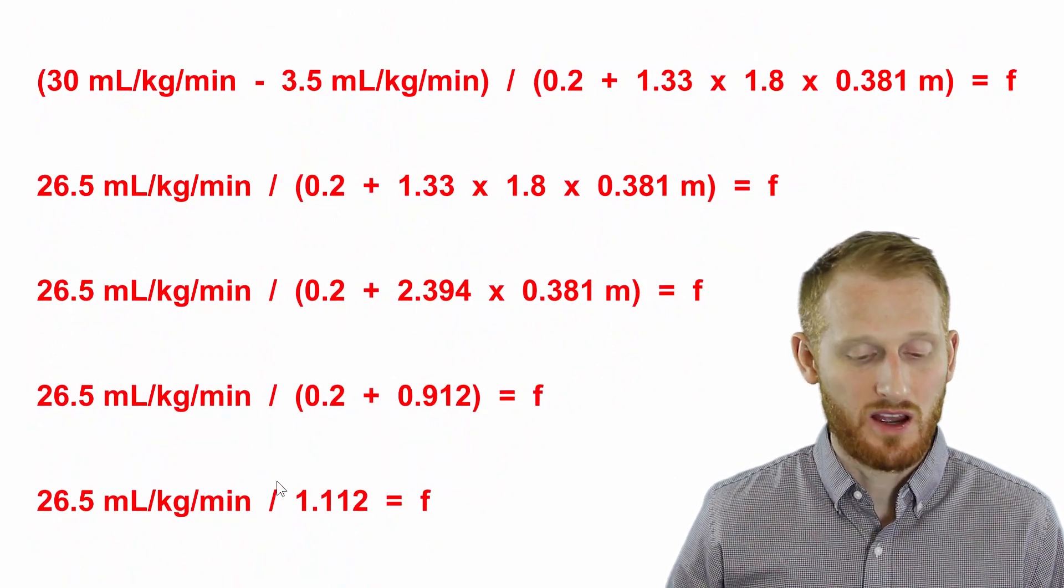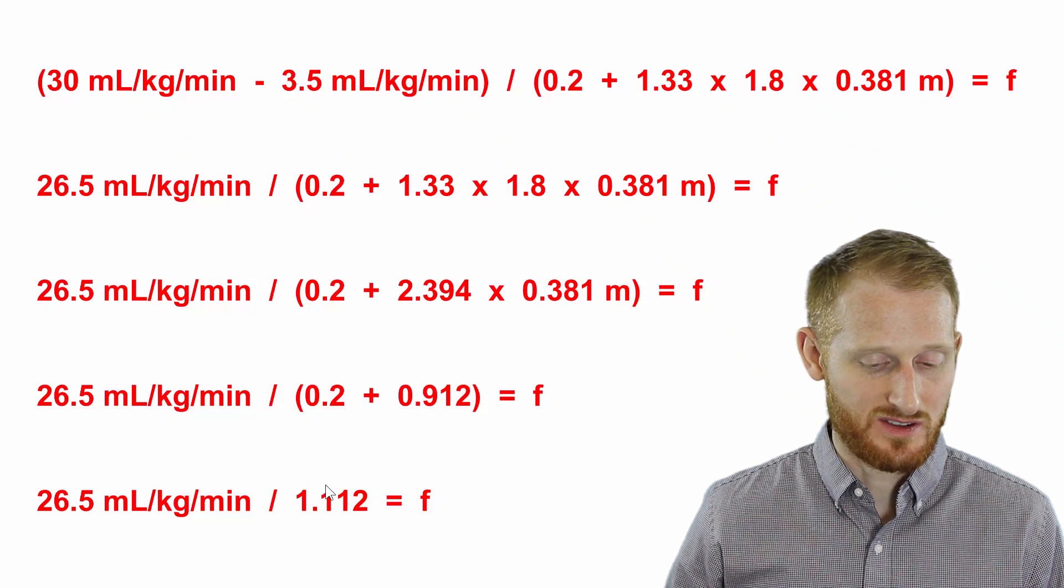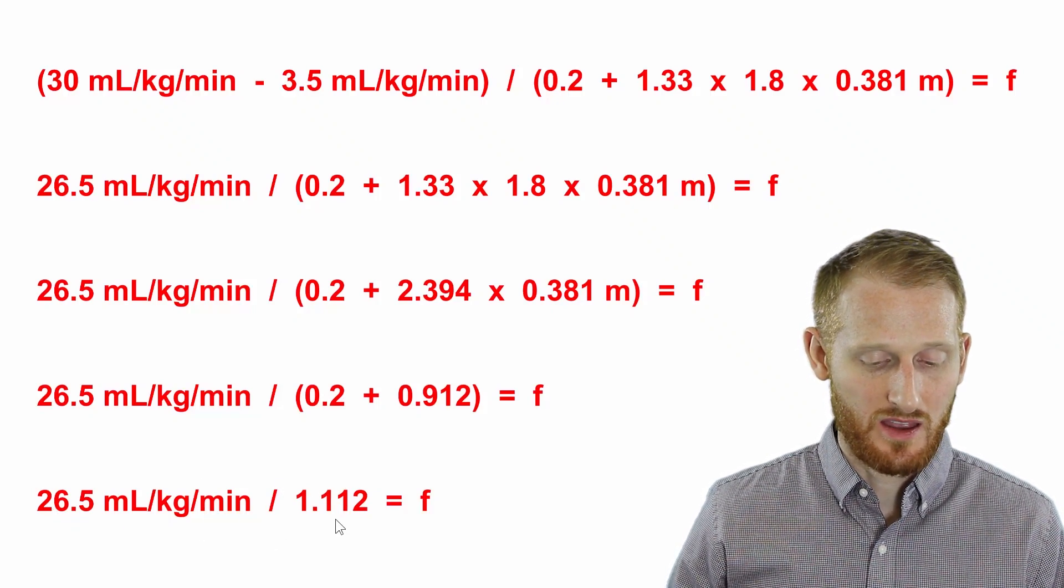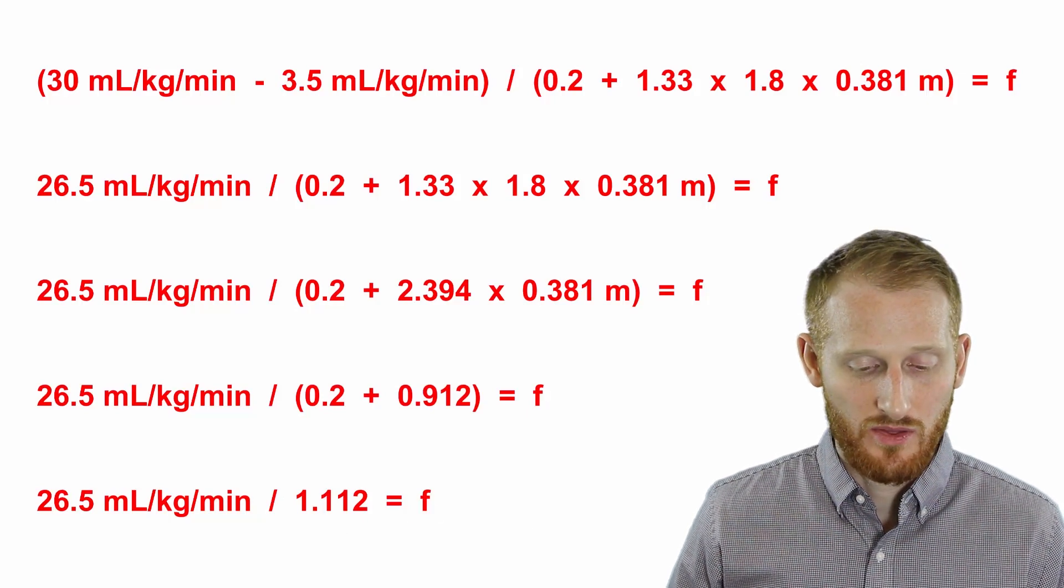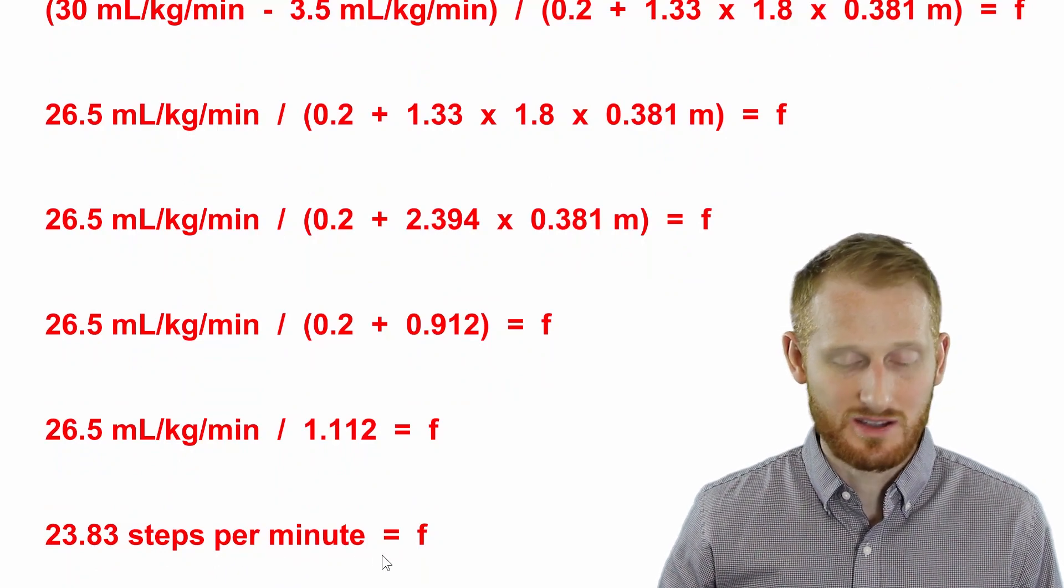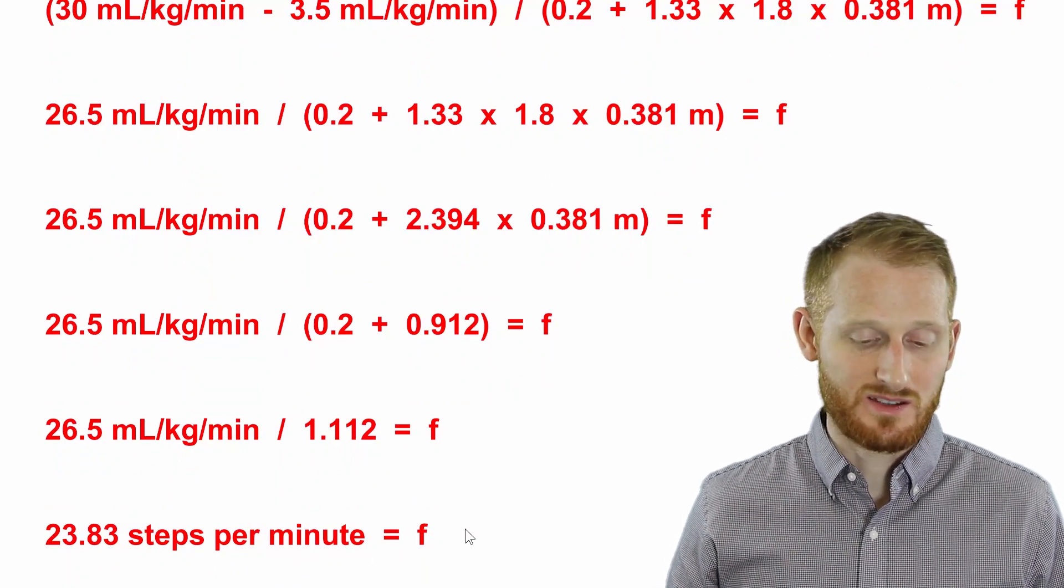Now we can do the addition. So 0.2 plus 0.912 gives us 1.112. All we have left is this last step, this division step here. So 26.5 divided by 1.112 gives us our step frequency of 23.83 steps per minute for this exercise bout.